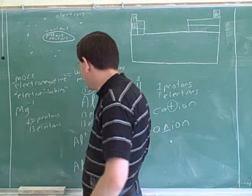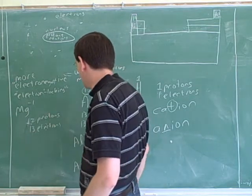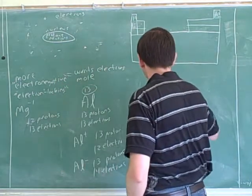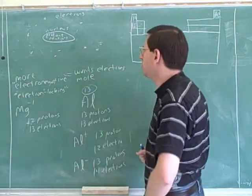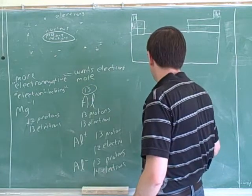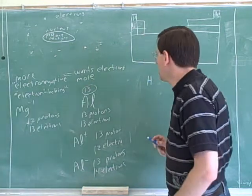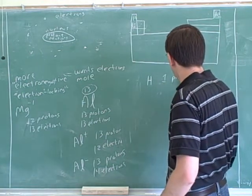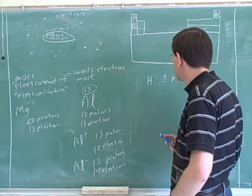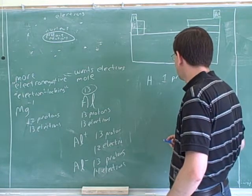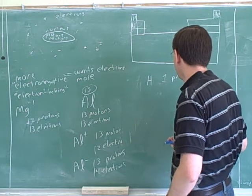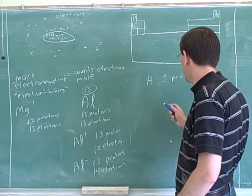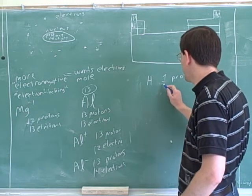The electrons relative to the protons determine the charge. So let's go back to hydrogen. How many protons does hydrogen have? One. And if it was a neutral hydrogen, you would have one electron.